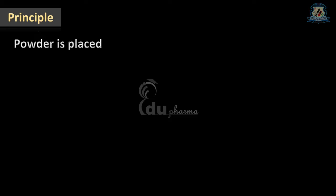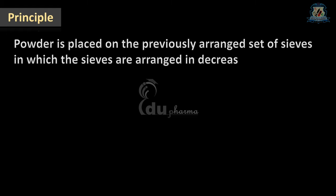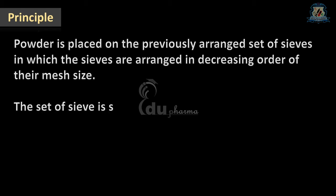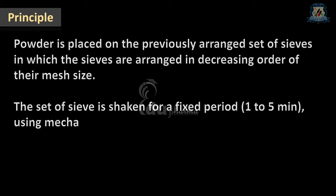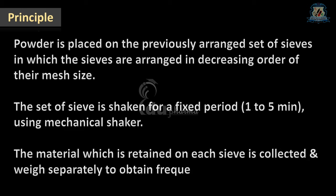Let's see the principle of sieve analysis, or how it works. In this method, powder is placed on a previously arranged set of sieves in which the sieves are arranged in decreasing order of their mesh size. The set of sieves is shaken for a fixed period of one to five minutes using a mechanical shaker. The material retained on each sieve is collected and weighed separately to obtain a frequency distribution curve.